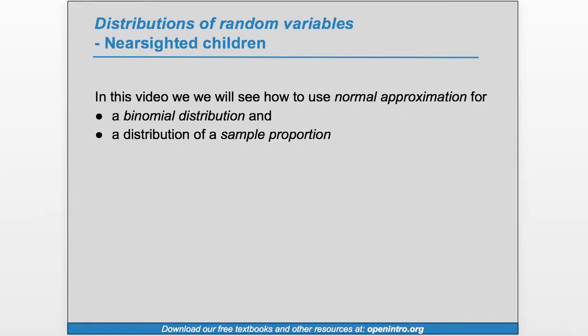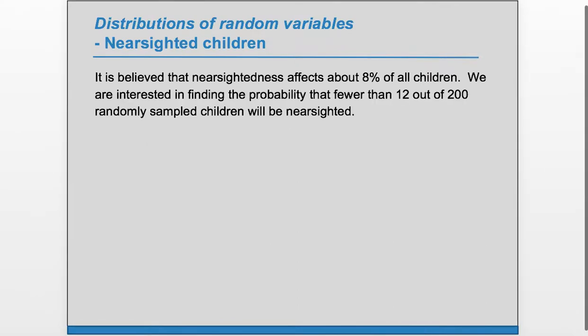Hi, this is Leah from OpenIntro. In this video we will see how to use normal approximation for a binomial distribution and the distribution of a sample proportion. It is believed that nearsightedness affects about 8% of all children. We are interested in finding the probability that fewer than 12 out of 200 randomly sampled children will be nearsighted.